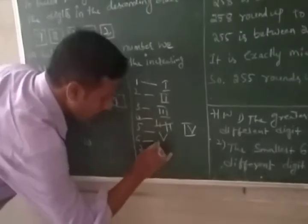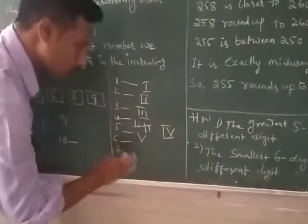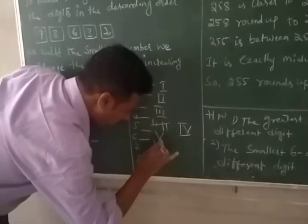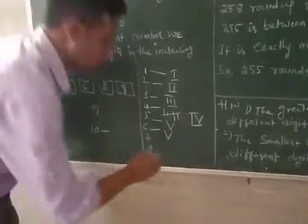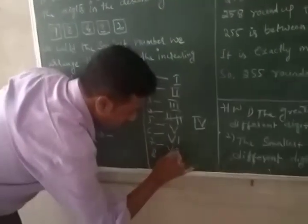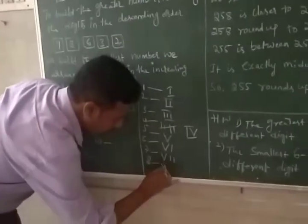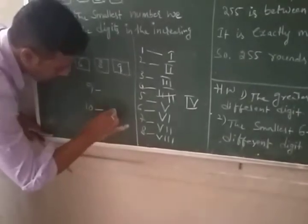Next, 6 is V plus I, written as VI. 7 is V plus II, written as VII. 8 is V plus III, written as VIII. And 10 is equal to X.